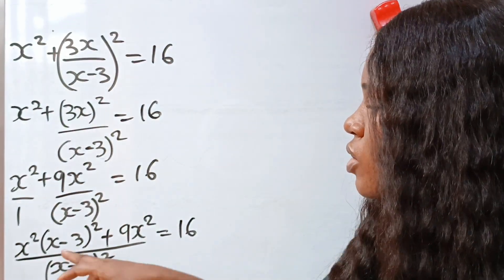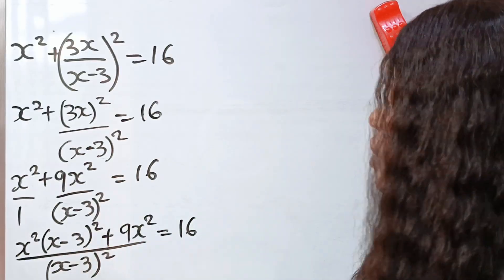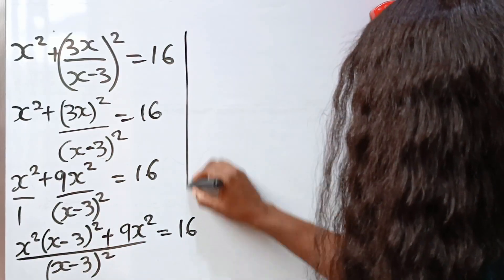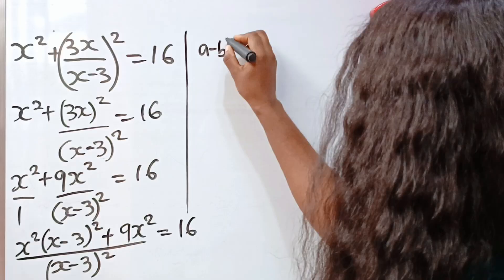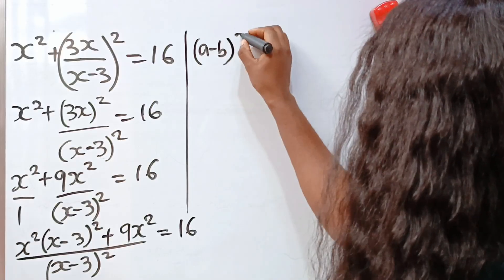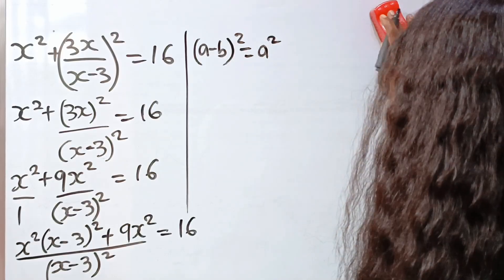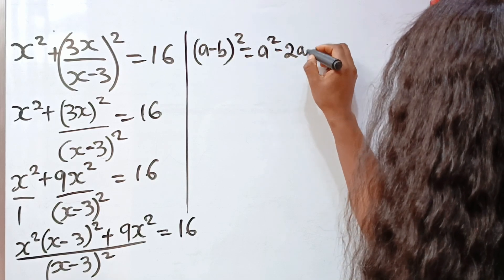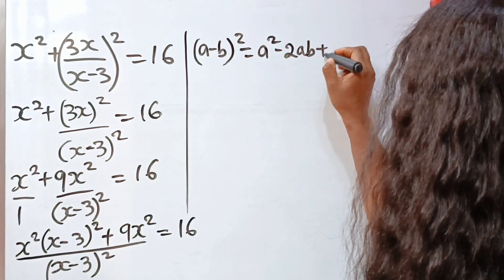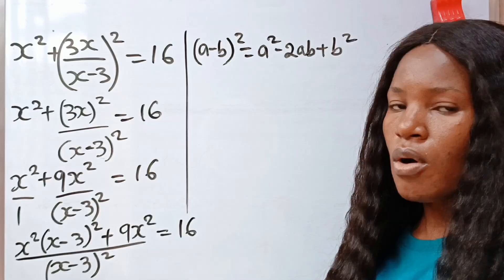Now let us note that a minus b squared is equal to a squared minus 2ab plus b squared.